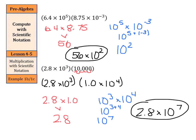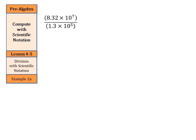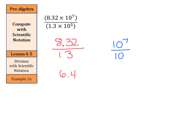We're going to use a very similar process with division. When we divide with scientific notation, we separate the problem. We take 8.32 divided by 1.3, which gives us 6.4. Separately, we do 10 to the 7th divided by 10 to the 5th. Using our division with powers rules, we subtract the exponents, giving us 10 to the 2nd. Our final answer is 6.4 times 10 to the 2nd.